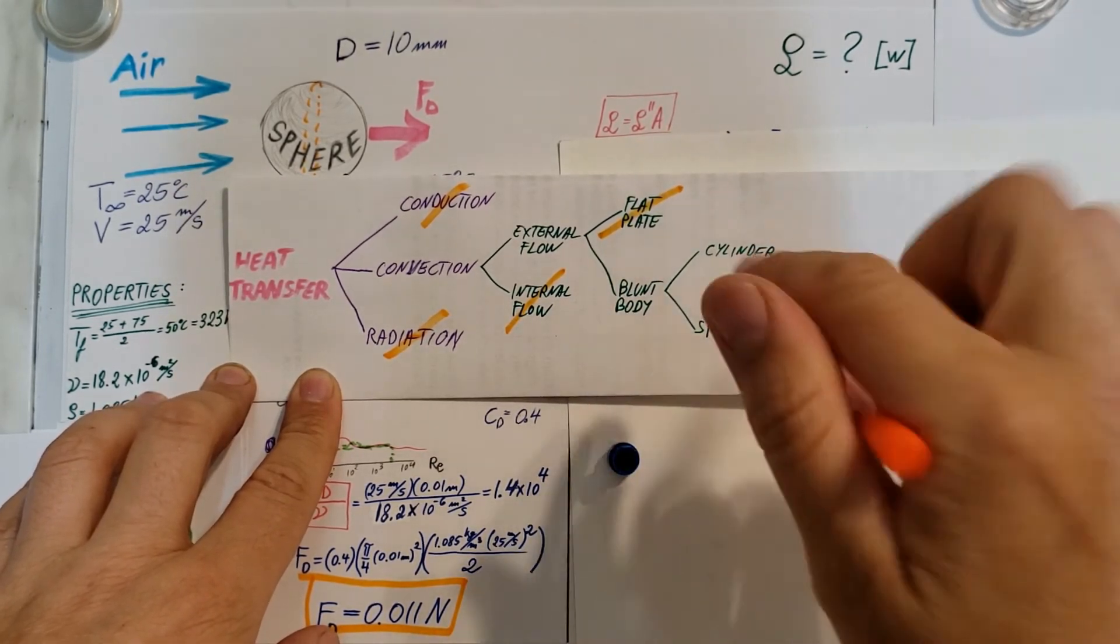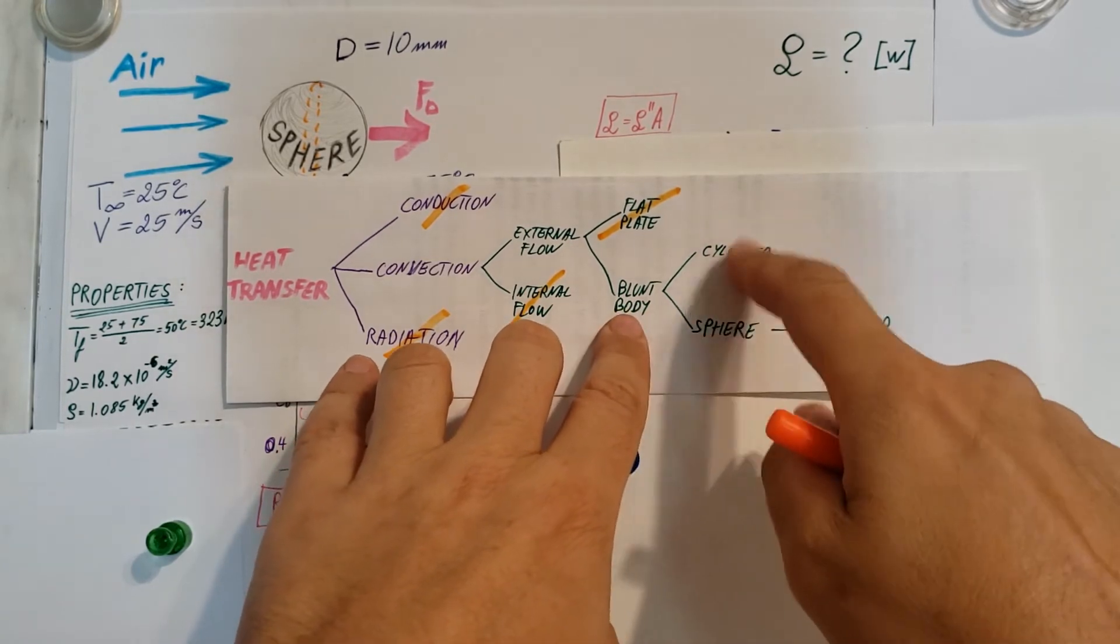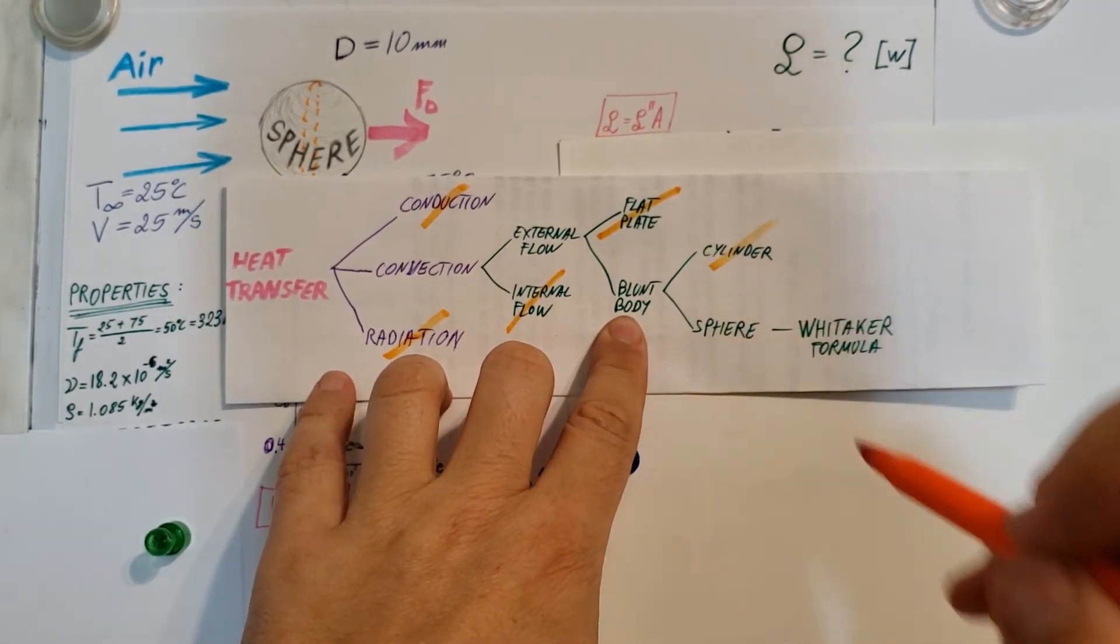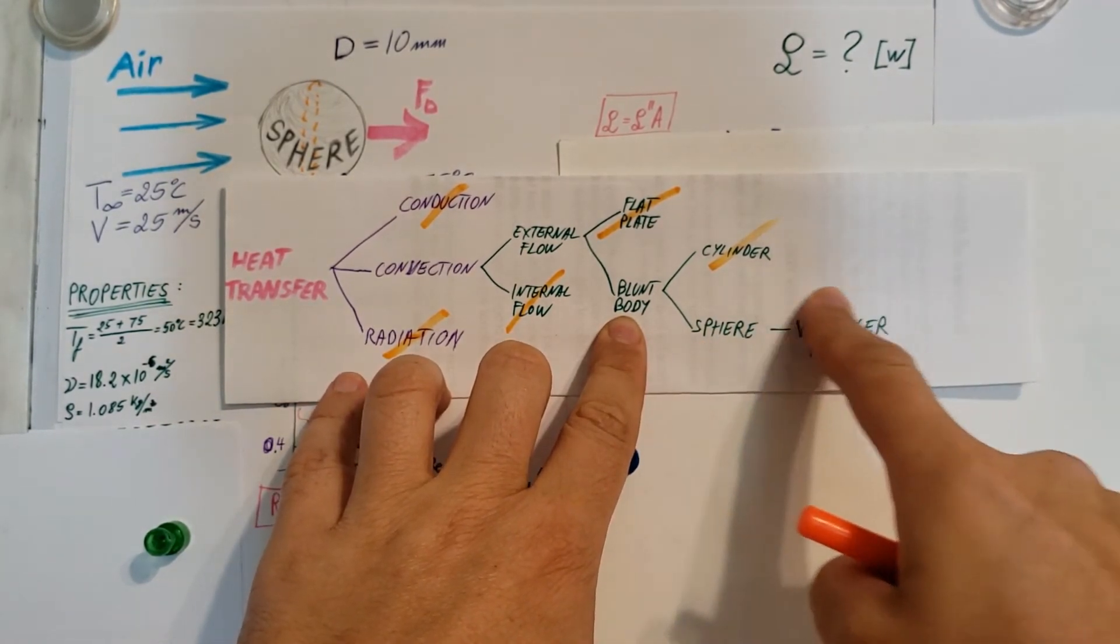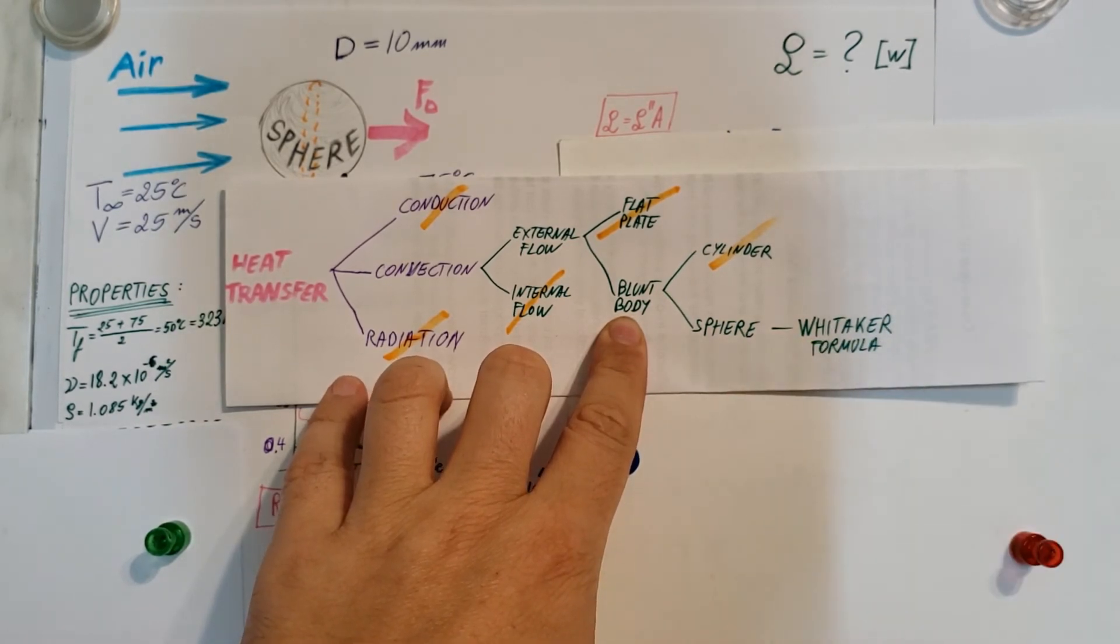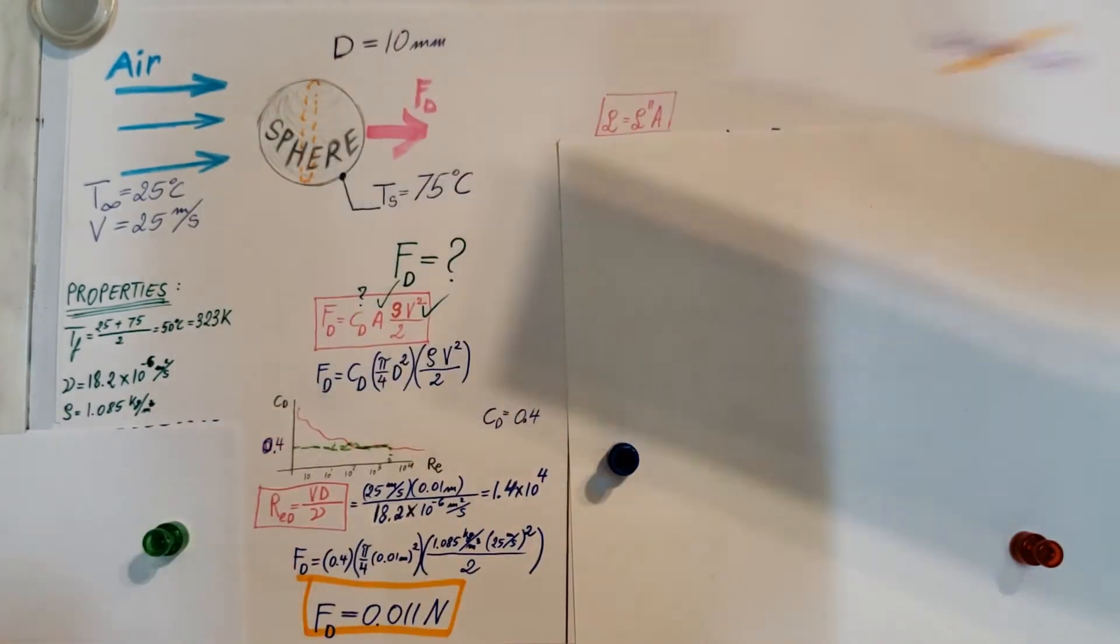Is this a flat plate or a blunt body? Not a flat plate, we have a blunt body. Formulas we have for cylinders, we have for spheres. This is a sphere, so we're not interested in a cylinder. And for sphere we know that we're going to have a formula by Whitaker and that's what we're going to be shooting for. Let's see how we're going to be able to use it.